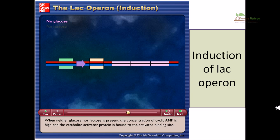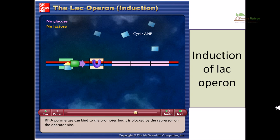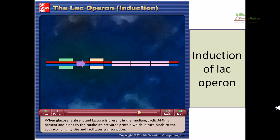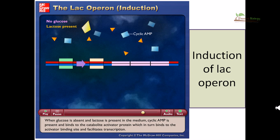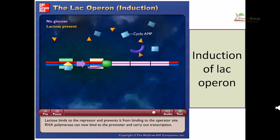When neither glucose nor lactose is present, the concentration of cyclic AMP is high and CAP is bound to the activator binding site. RNA polymerase can bind to the promoter, but it is blocked by the repressor on the operator site. When glucose is absent and lactose is present, cyclic AMP is present and binds to CAP, which in turn binds to the activator binding site and facilitates transcription. Lactose binds to the repressor and prevents it from binding to the operator site, so RNA polymerase can now bind to the promoter and carry out transcription.